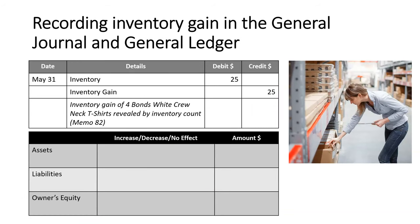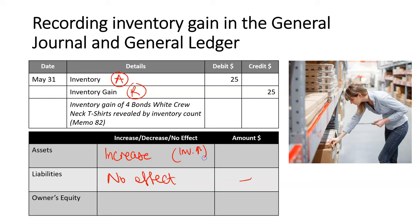Over in the accounting equation effect: inventory is an asset and inventory gain is a revenue, so once again there is no effect on liabilities. We have an increase in assets because inventory is increasing by $25. We also have an increase in owner's equity because when revenue increases, net profit increases — and that's going to increase by $25 as well. Remember, the method shown here is the identified cost method. We will be going through the first in, first out — or FIFO — method in another video, including how to record inventory loss and gain using that method.